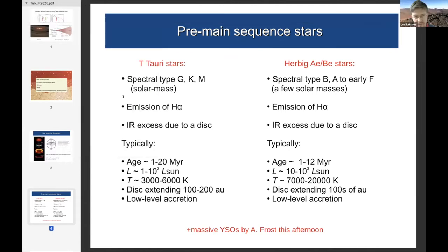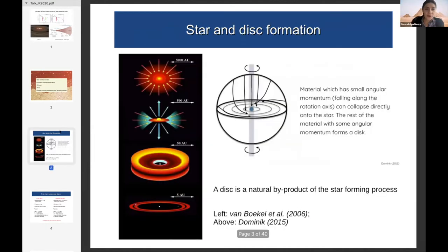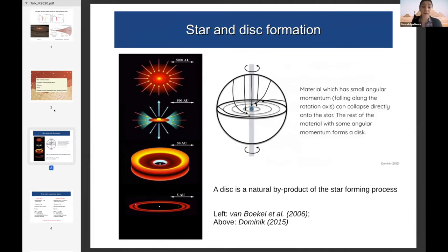In the paradigm of star formation, you have a cloud that is collapsing under gravity. After a while there will be outflows and material starts to infall from a partially rotating cloud onto the star. Because of excess angular momentum, not all the material falls immediately into the star — a disc will be formed as well. The formation of a disc together with a star is a natural process, expected to almost always happen.